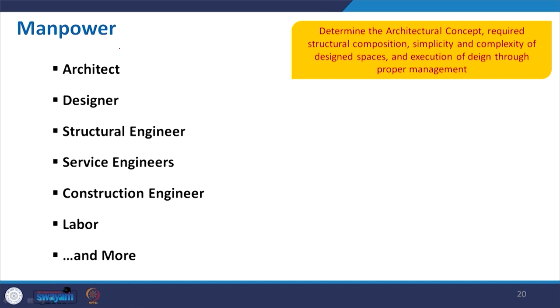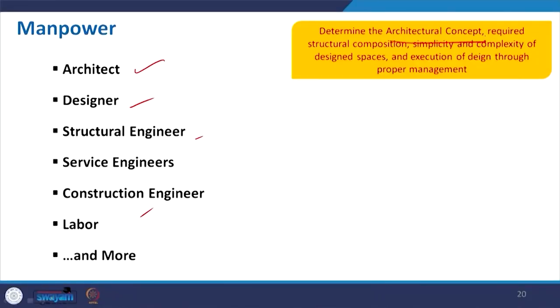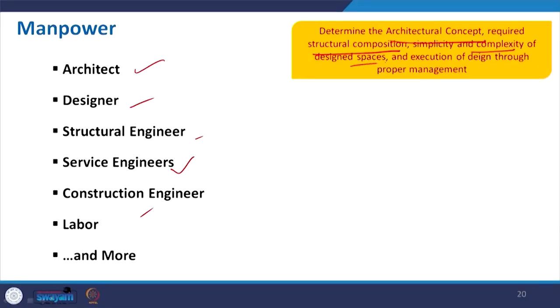Manpower — already discussed: the architect, designer, structural engineer, service engineer, labor, and more. Depending on their coordination, one can really achieve a huge and very beautiful structure. This determines the architectural concept required, determines the structural composition that people want, feeds into the services the building needs, and whether we go for a very simplistic or very complex structure, then the execution of design through proper management. Whenever you have a good team, you can take up the particular challenge to do something really great — any complex design can be achieved with good manpower.